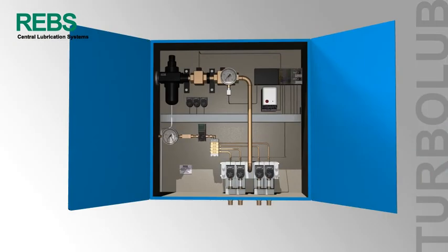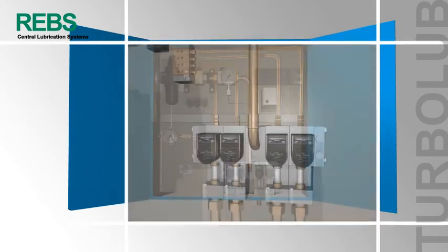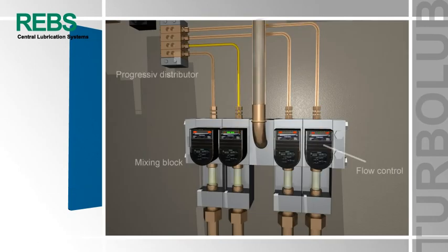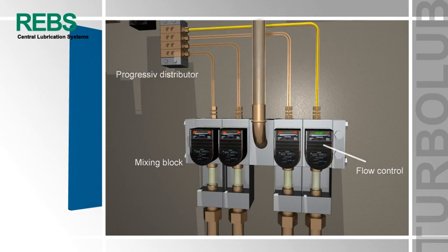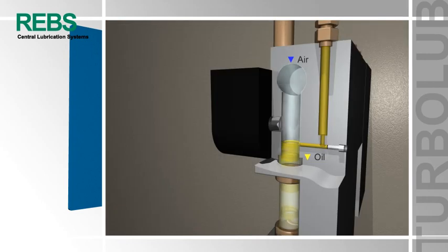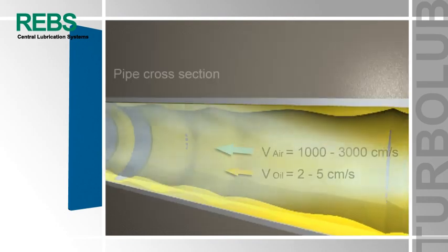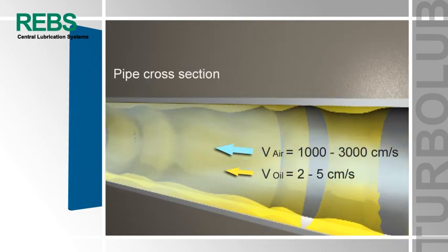When the Turbuloop system starts, the oil is distributed via the monitored electronically progressive distributor to the various chambers inside the mixing block. This process is continuously monitored by flow controls. A turbulent airflow conveys the oil undulated along the inside pipe wall from the mixing block to the individual bearings.